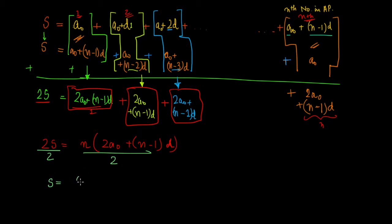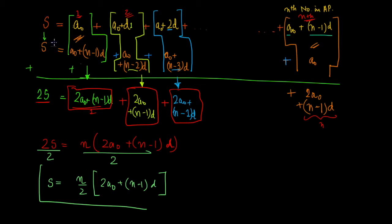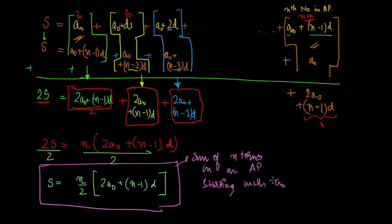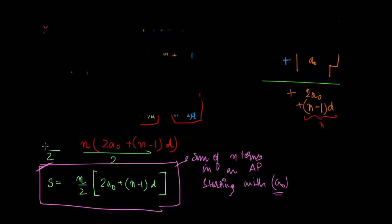Dividing both sides by 2, we get: S = (n/2) × [2a₀ + (n−1)D]. This is our expression for the sum of n terms in an AP starting with a₀ and ending at the nth term a₀ + (n−1)D. This is the expression we must use to find the sum of n terms in an AP.